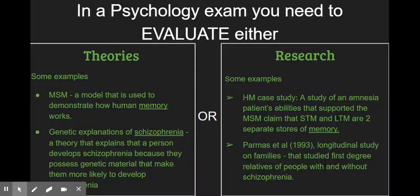An example of a theory is any explanation for a behavior, for example the multi-store model which explains how human memory works. Research is any study done that demonstrates or supports this theory, for example the HM case study which goes on to demonstrate key elements of the multi-store model of memory.